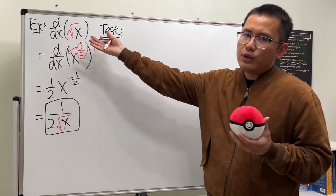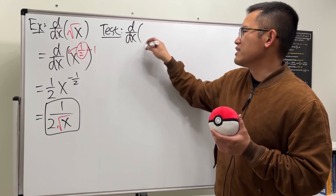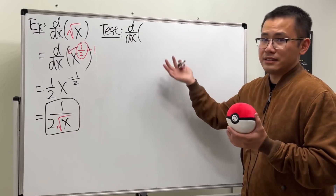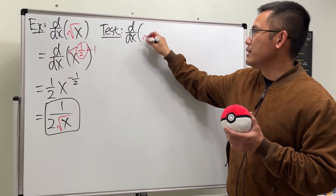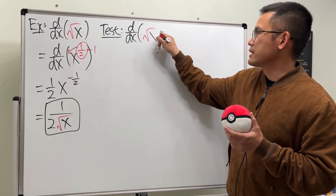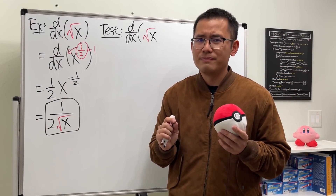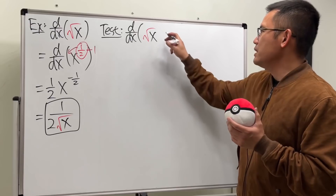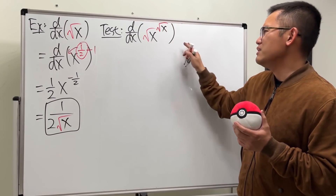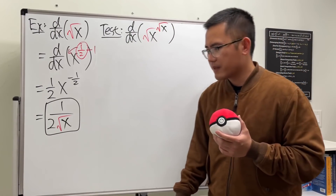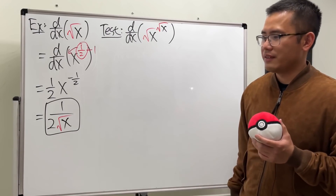Since I gave you the square root already, I'll give you something similar. Here is the test question: the square root of x raised to the power of another square root of x. They still look the same, so go ahead — you have about five seconds.